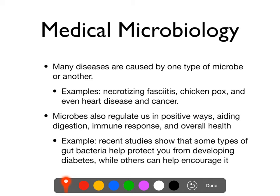For example, there's been a recent study showing that some types of gut bacteria — and everyone has different gut bacteria depending on diet, where you live in the world, personal biochemistry, and random chance — can actually help protect you from developing type 2 diabetes. Whereas having a different type of gut bacteria can actually raise the likelihood of developing type 2 diabetes. Personally, I think that's an important thing to study.